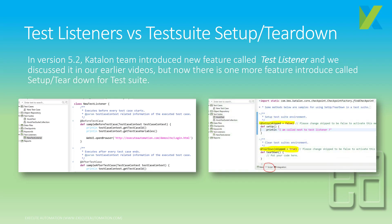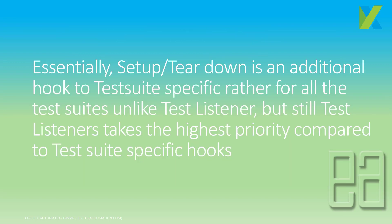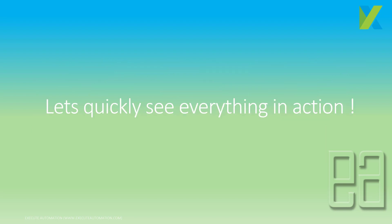As you can see on the left-hand side, there is the test listener we talked about in previous videos, where we handled opening and closing of the browser using before test case and after test case attributes. On the right-hand side, there is a new tab added in the test suite where you can script the setup and teardown yourself. Essentially, setup teardown is an additional hook specific to a test suite, unlike test listeners which apply to all suites. Test listeners still take the highest priority compared to these test-suite-specific hooks.